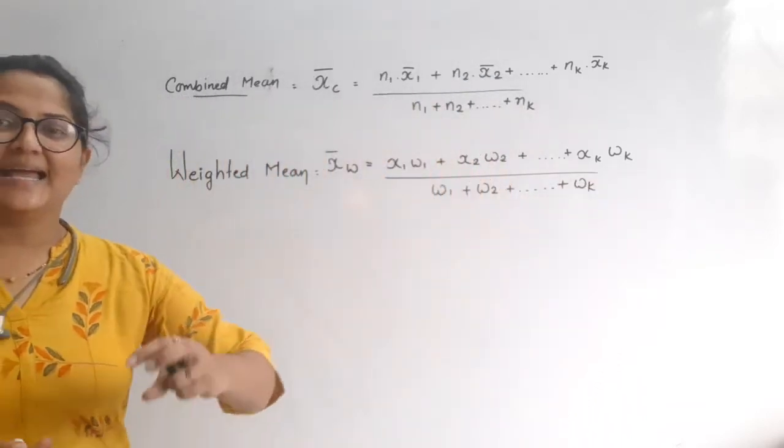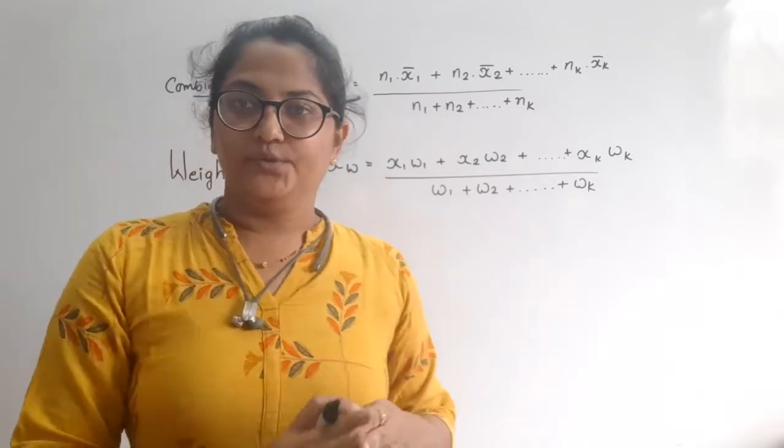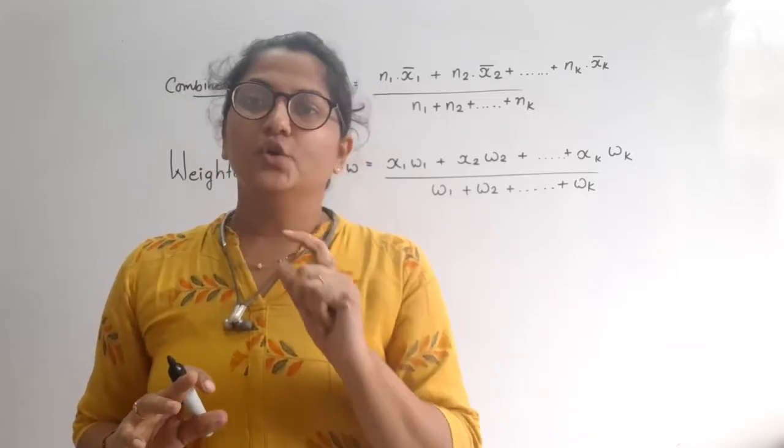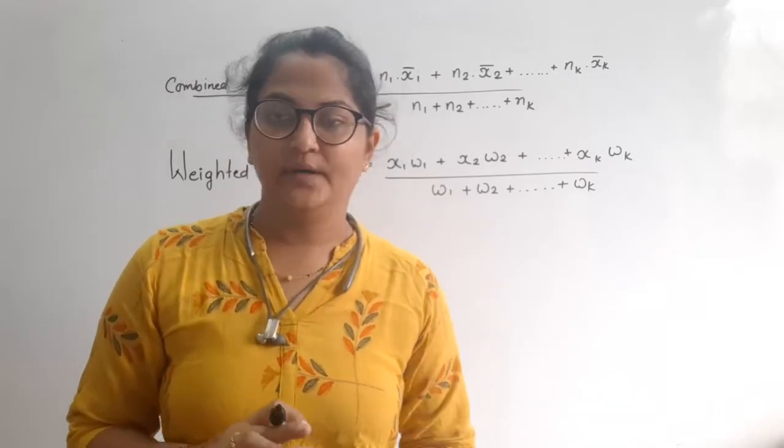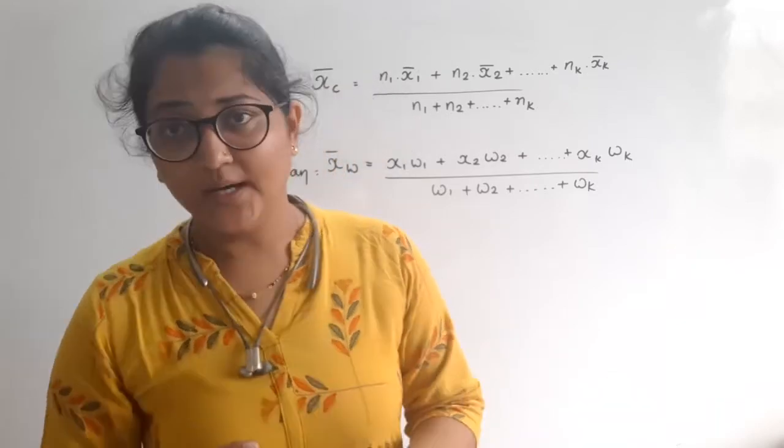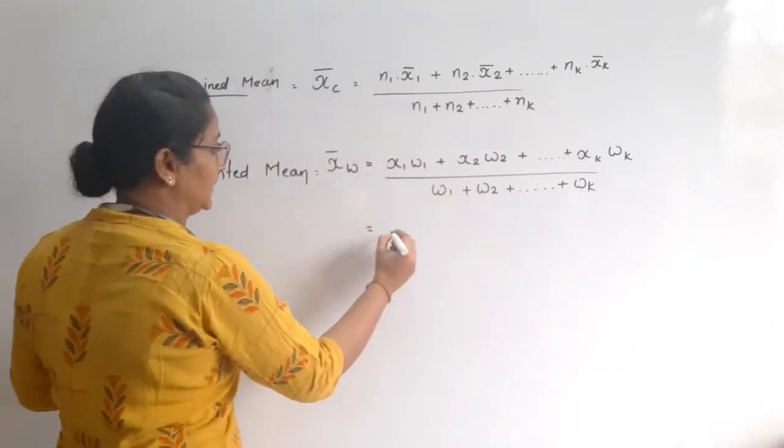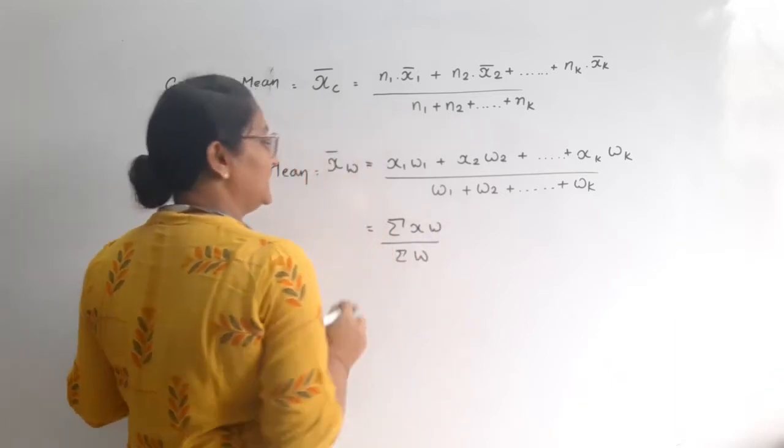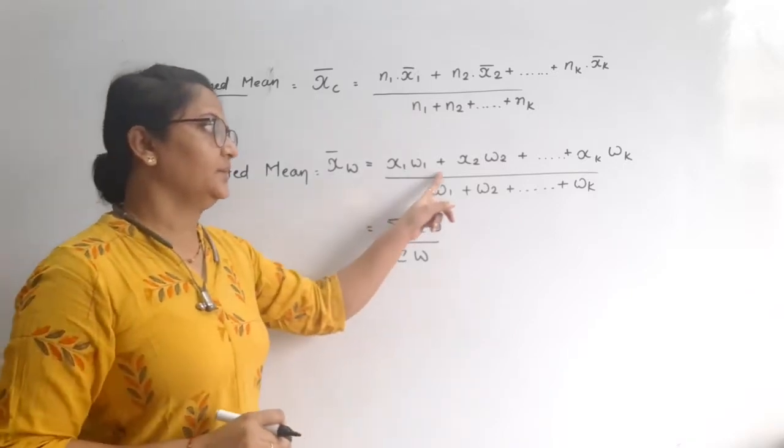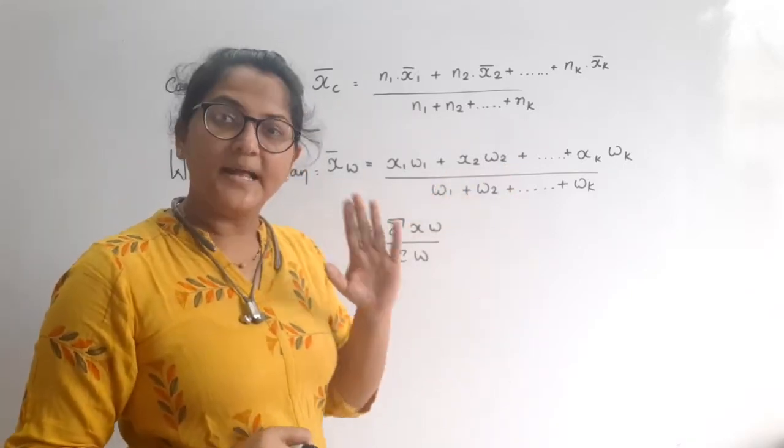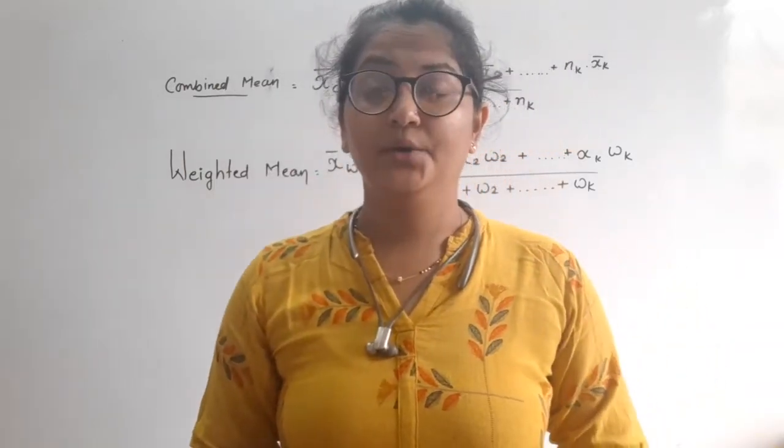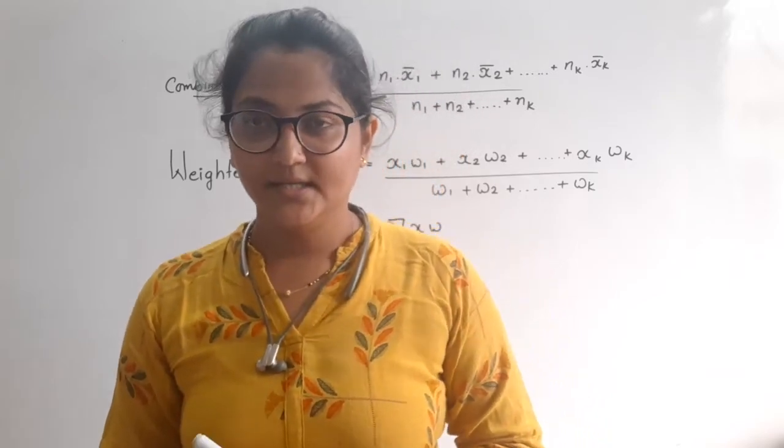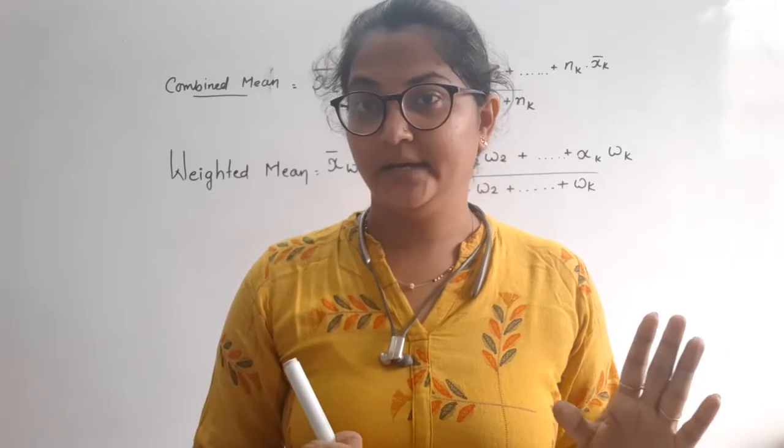Now the Weighted Mean formula. Like this, X and W, X and W. If you have any pairs, then whatever weight is given, multiply and divide. If I write this in short form, I will write sigma X W upon sigma W. Sigma means total. First, write the formula in short form. Clear?